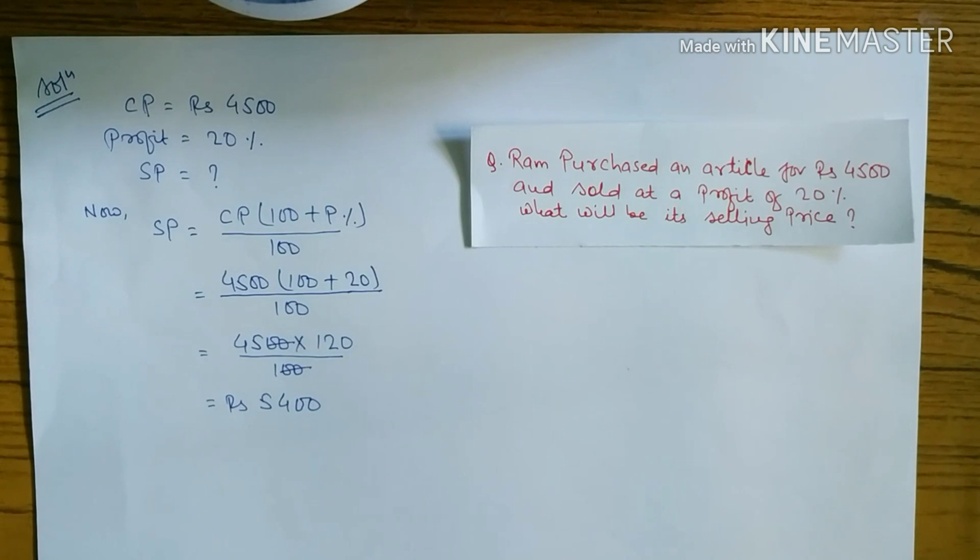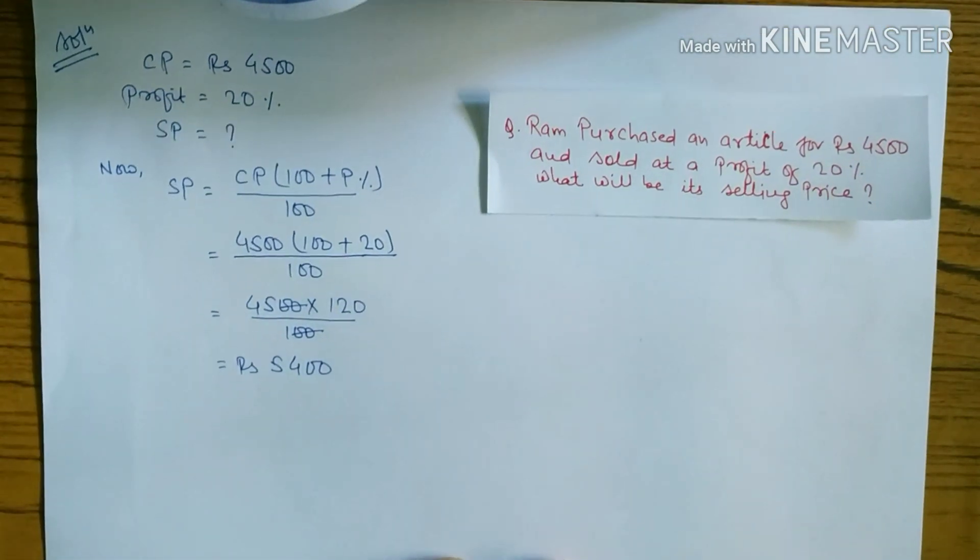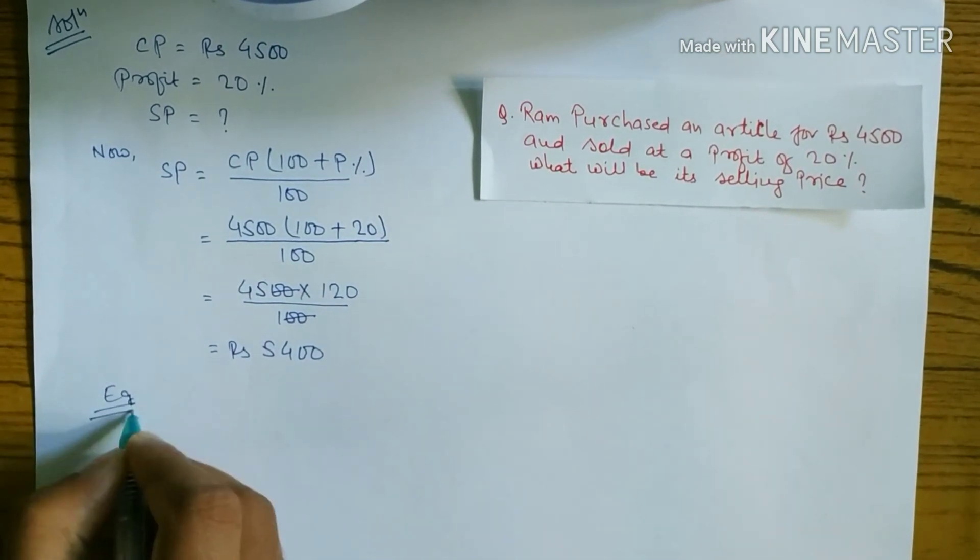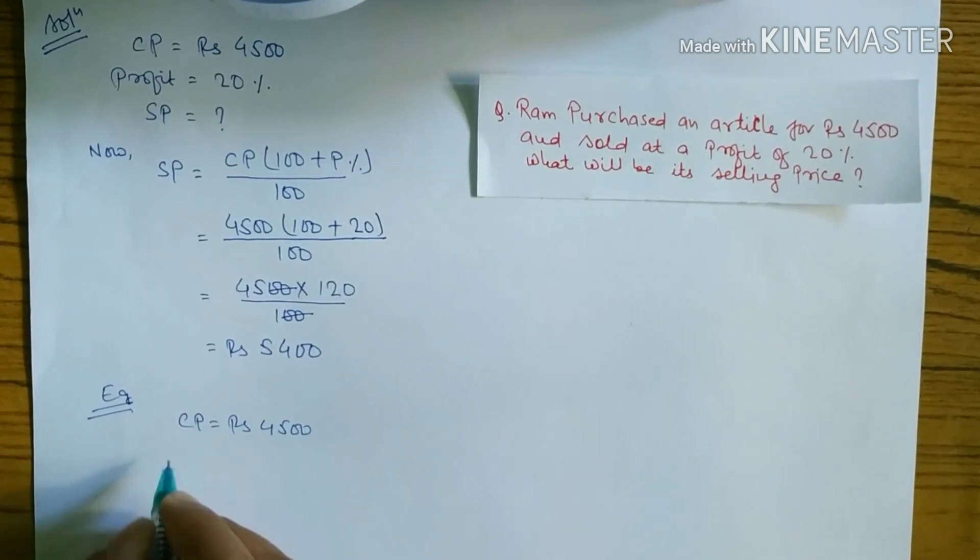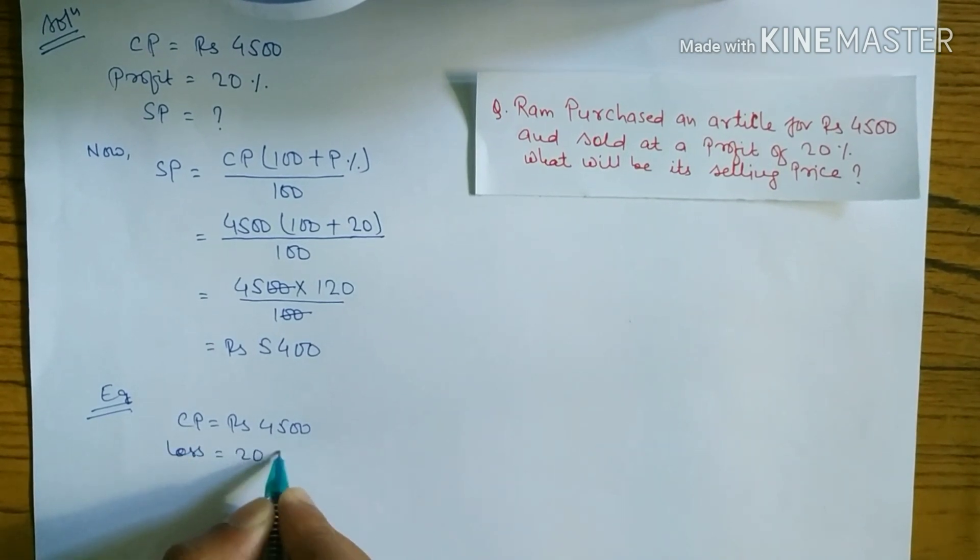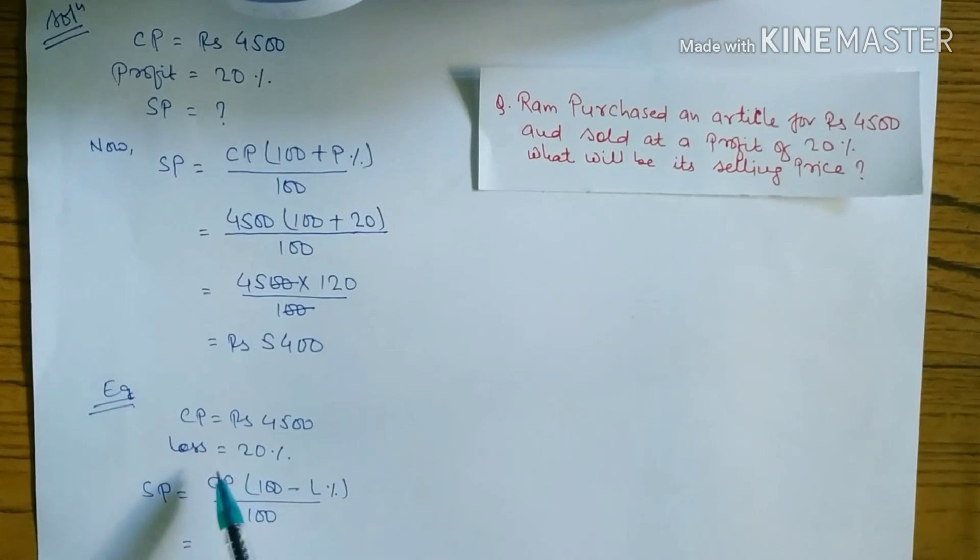Suppose now cost price is given and in the place of profit there is a loss of 20 percent. What do we have to do? This is just an example. CP is given as rupees 4,500 and loss is equal to 20 percent. This time for selling price we have to use the formula: CP times (100 minus loss percent) divided by 100. If profit, we write plus profit percent, and if loss, we write minus loss percent. That much is the difference.